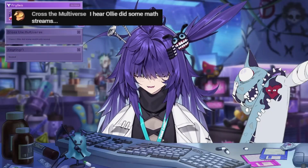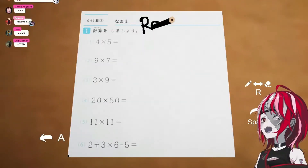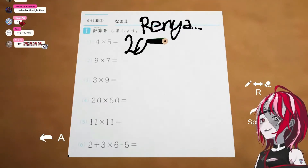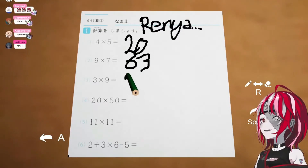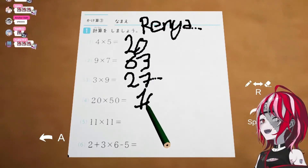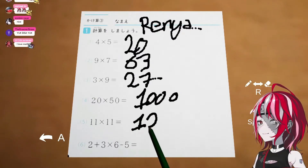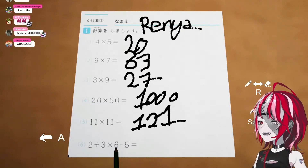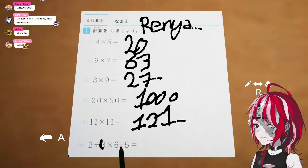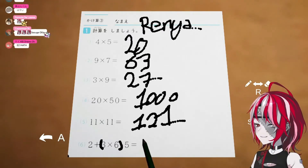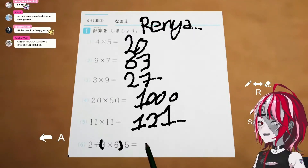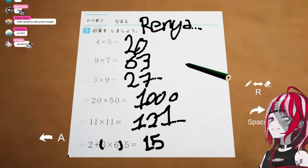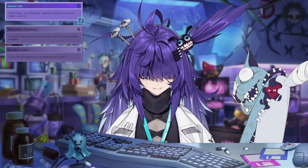I heard Ollie did some math streams — is that how I learn math? Twenty, sixty-three, twenty-seven, a thousand, one, two, one. And remember guys, it's not like this plus this and this minus this, but it's like this. So that makes it 18, 12 minus 5... it's the minus. I'm assuming it's minus 15. Yeah, easy.